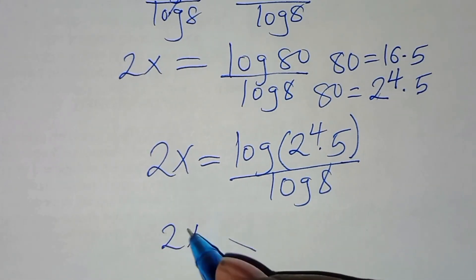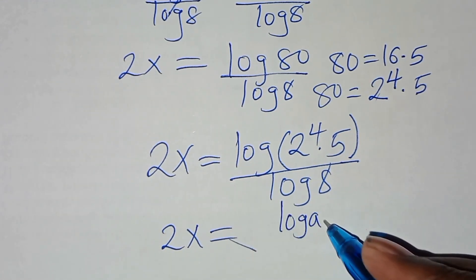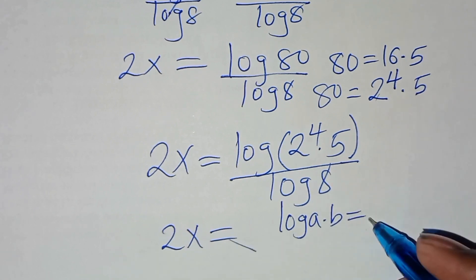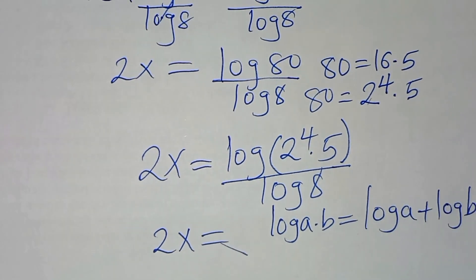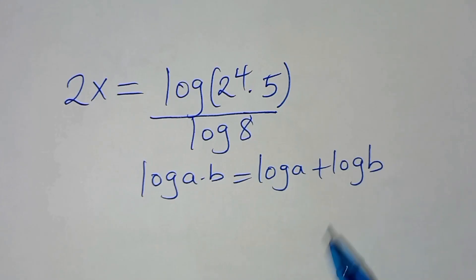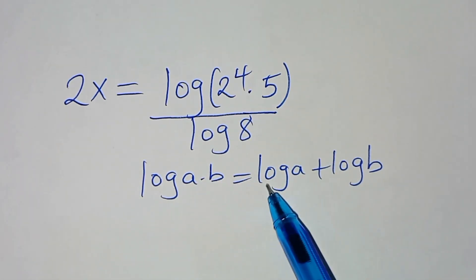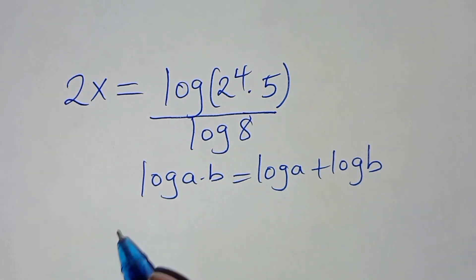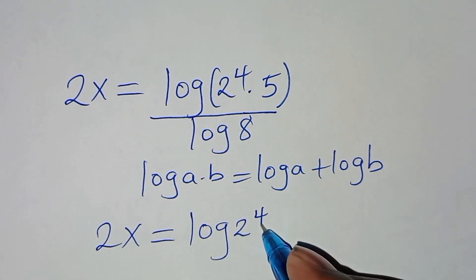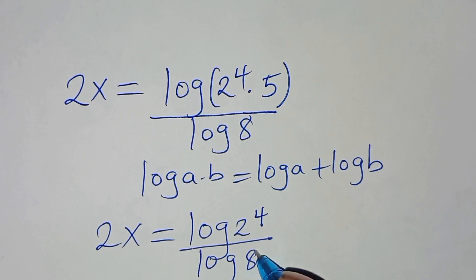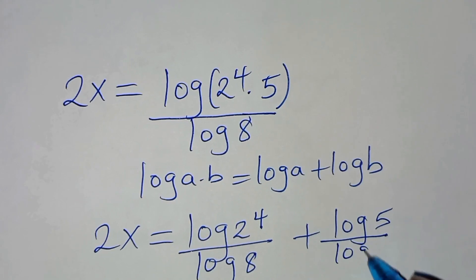Here we have 2x equal to ln(2 to the power 4 times 5). This is in the form of ln(a multiplied by b), which we can express as ln(a) plus ln(b). So applying this logarithm property, we have 2x equal to ln(2 to the power 4) divided by ln(8), plus ln(5) divided by ln(8).